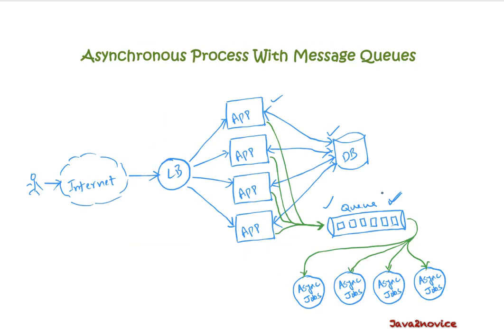Don't you see a risk of single point of failure here? What if your message queue goes down? Your application will definitely fail, right? But definitely not — message queues also support cluster mode. In that cluster, you can form multiple queues and they will avoid the risk of single point of failures and also address scaling at the queue level.